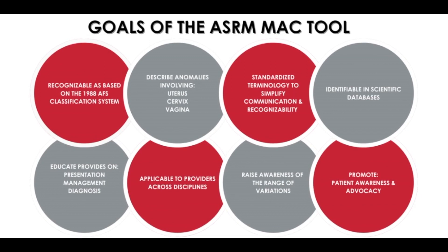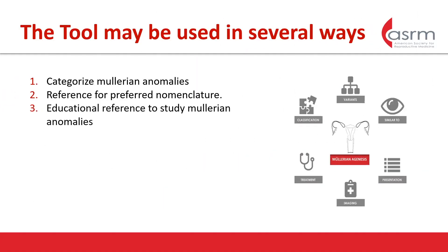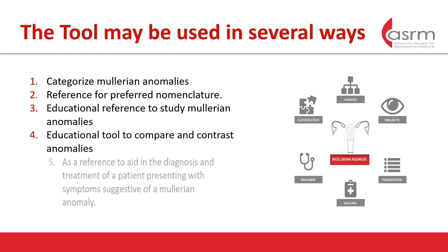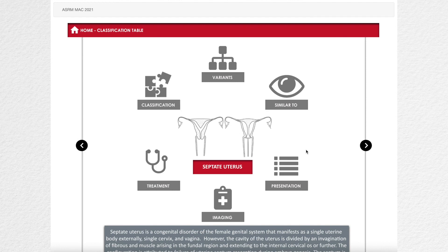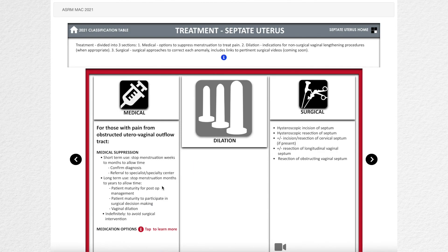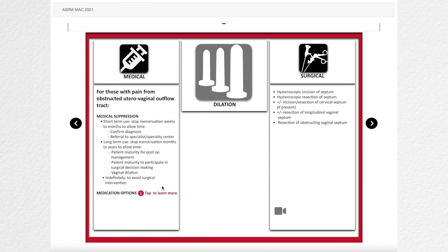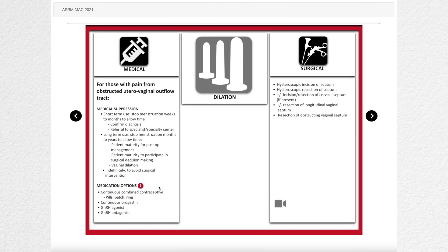First of all, we've categorized Müllerian anomalies and included a wide spectrum of them, so I think we've really improved the classification. The classification makes sense — we're trying to really standardize terminology and better communication between colleagues. It's very clear when you say to somebody: 'I've got a complete septate uterus with an obstructed right hemivagina associated with right renal agenesis' — you know exactly what's going on.